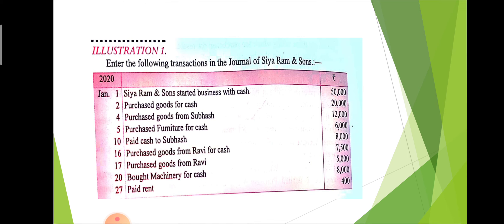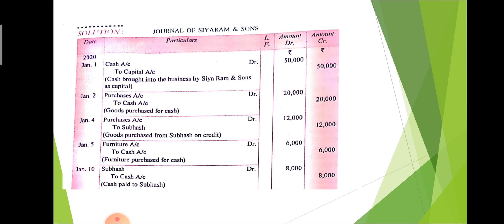Next: paid cash to Subhas. We give cash to Subhas, meaning cash goes from the business. Subhas is the receiver, and the rule says debit the receiver and credit the giver. The journal entry is: Subhas debit to cash account, because Subhas is the receiver and cash reduces from the business. This entry is a combination of two rules.